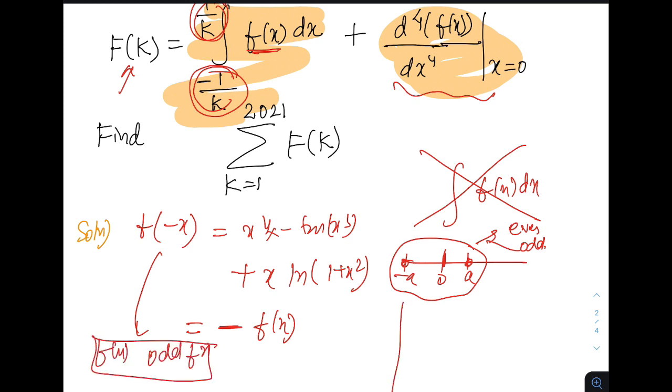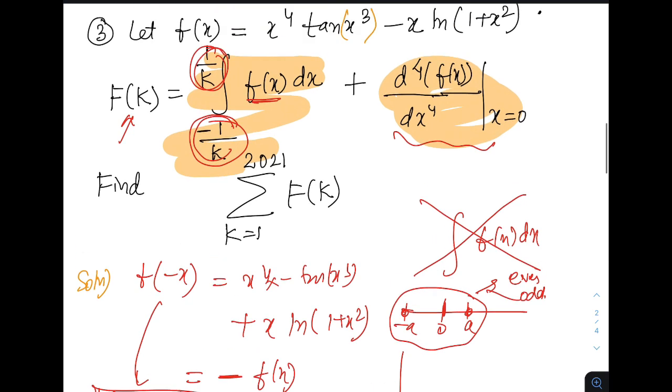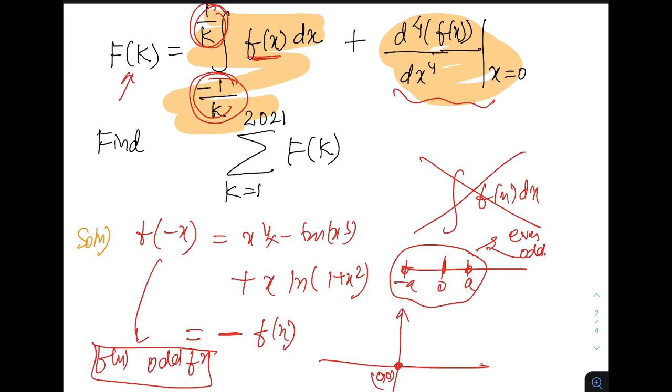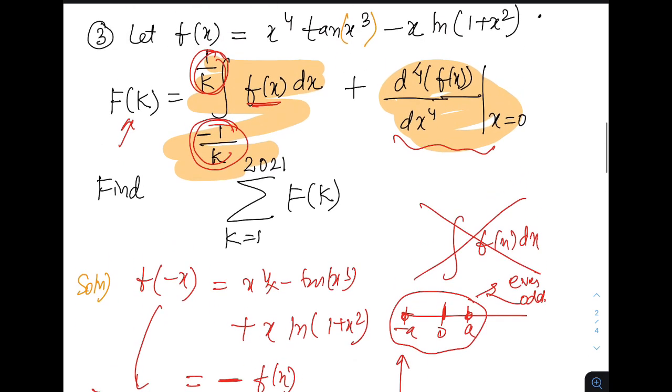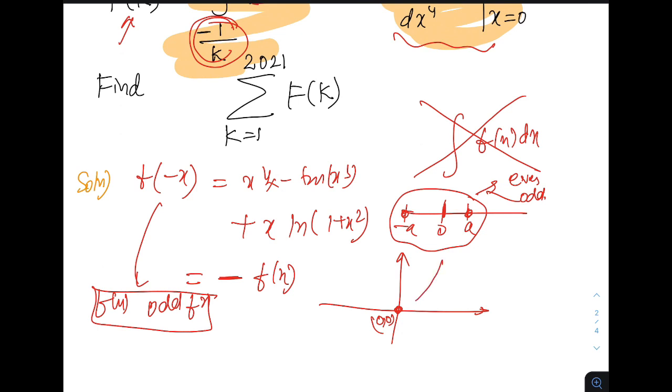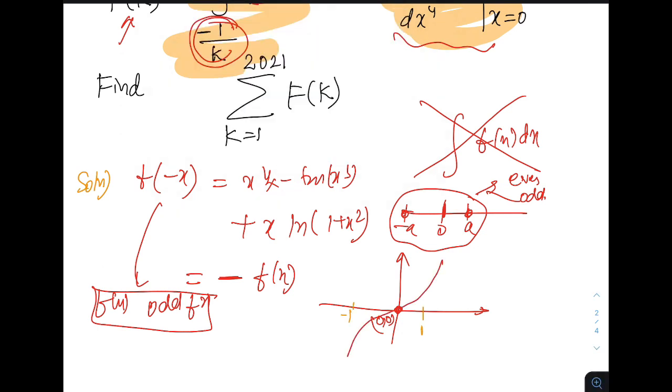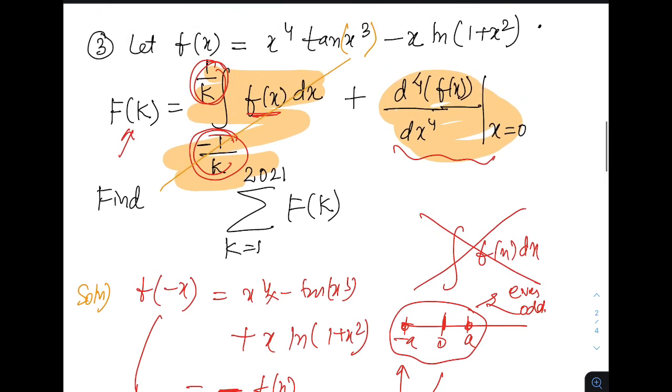f of x is an odd function. It means f of 0 has to be 0. Since a function is nicely differentiable and there is no danger of domain in between, it will be symmetric about origin. From minus 1 by k to 1 by k whatever area we have in this region exactly will have negative area. So their summation will be 0. So this part simply goes off.